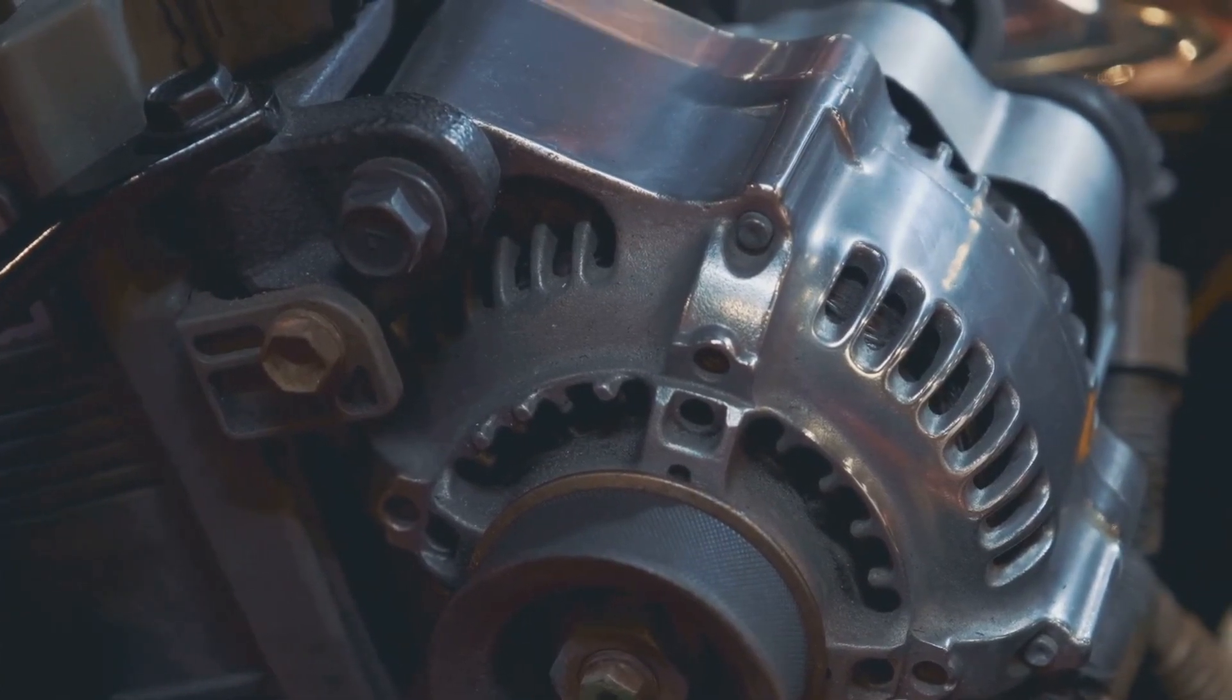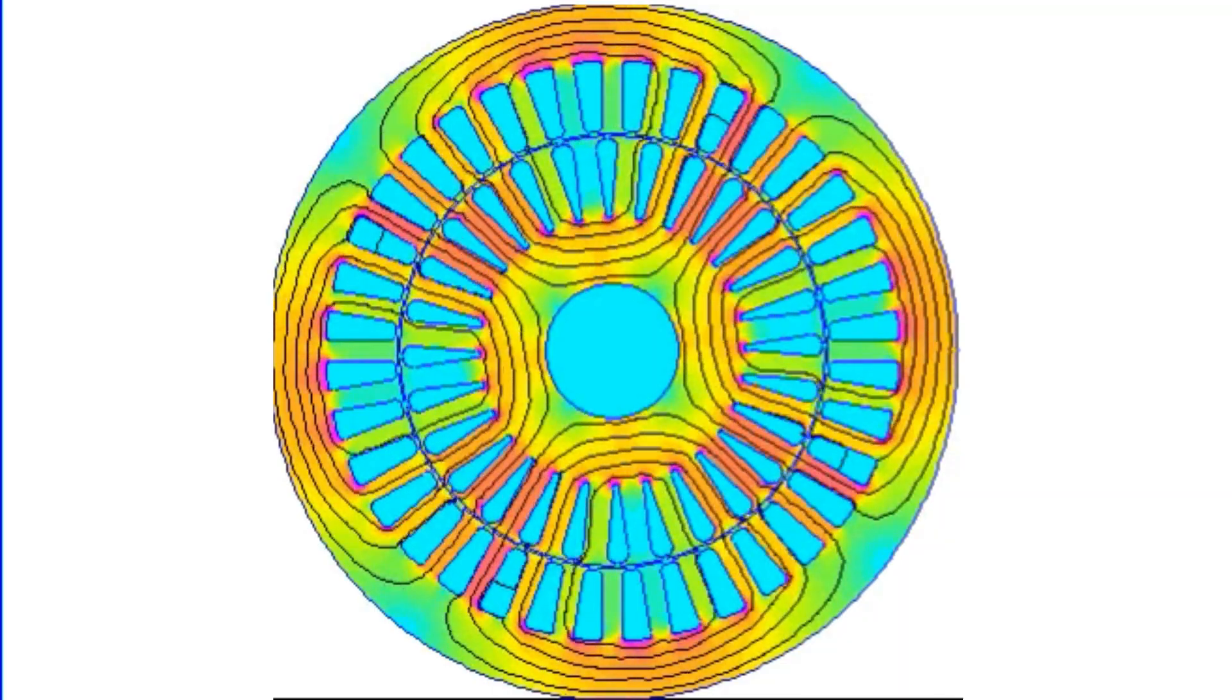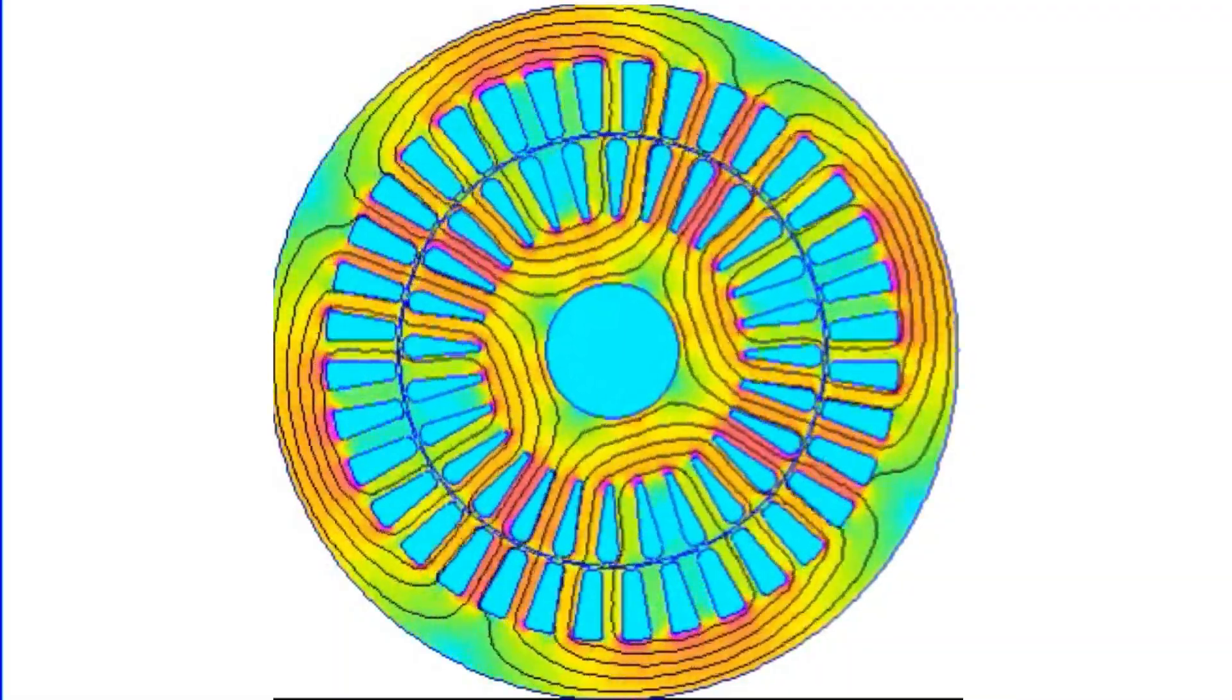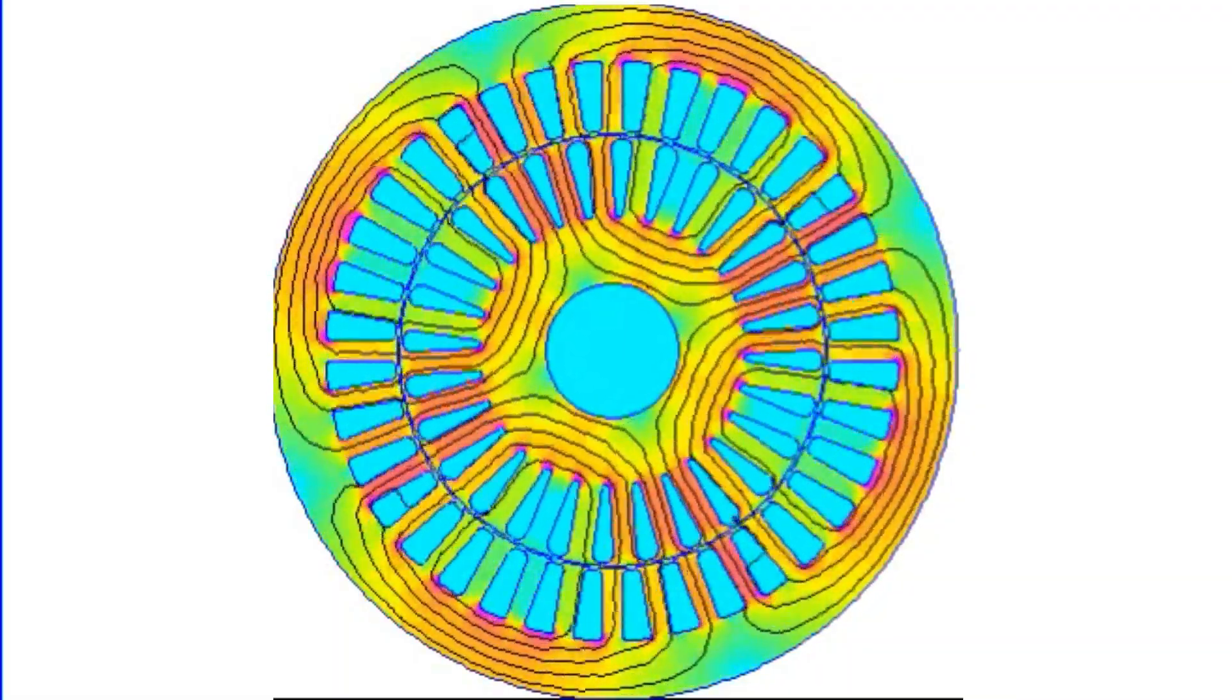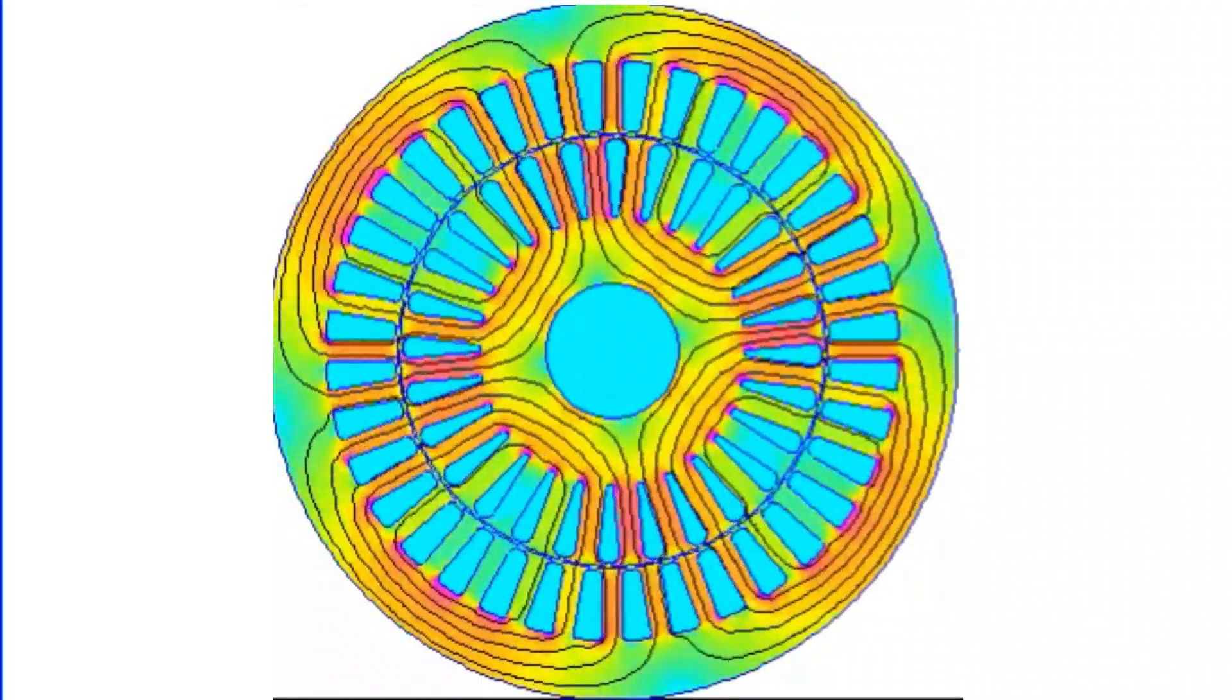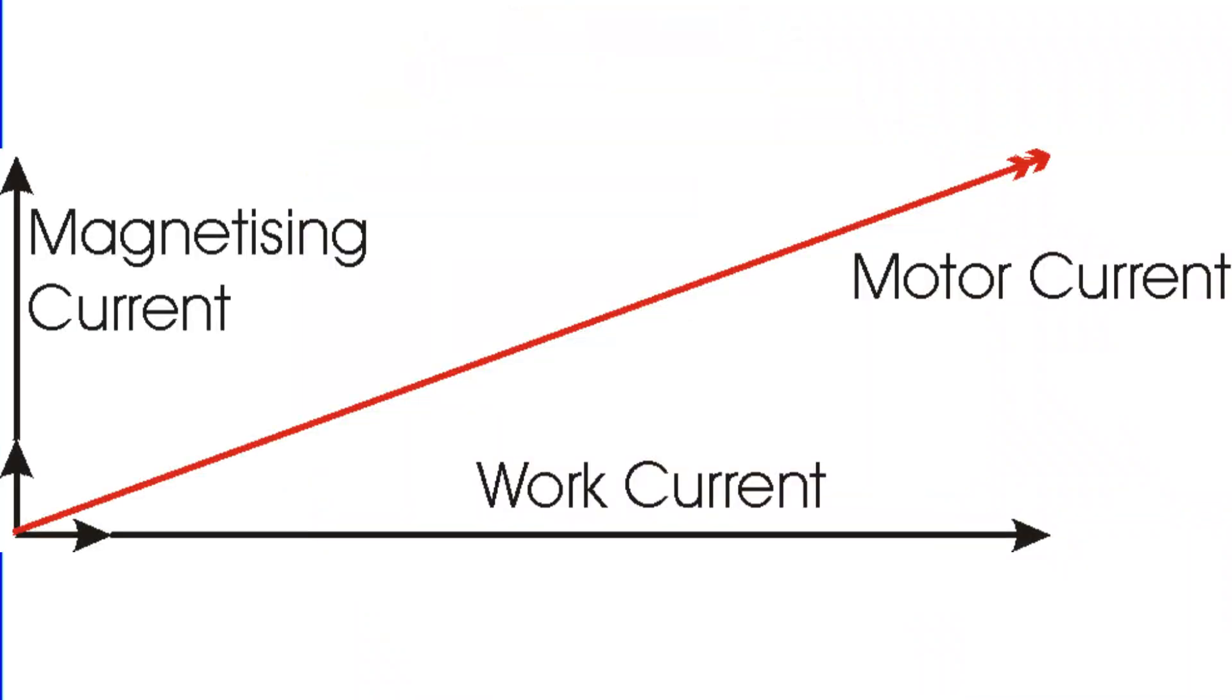The answer lies in the magnetizing current. Induction motors depend on a rotating magnetic field to induce current in the rotor. This magnetic field is created by the stator windings. But to create this magnetic field, the motor needs a current component called the magnetizing current.